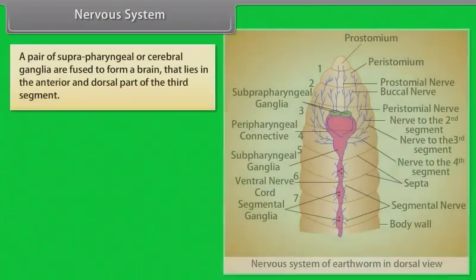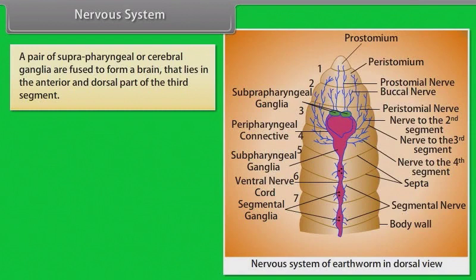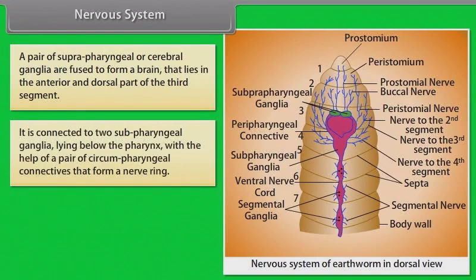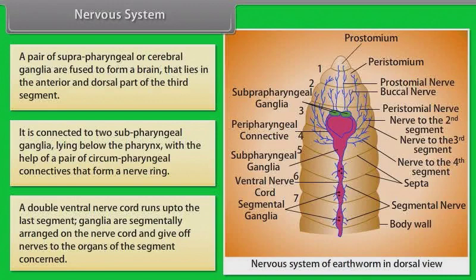Nervous System. A pair of suprapharyngeal or cerebral ganglia are fused to form a brain, which lies in the anterior and dorsal part of the third segment. It is connected to two subpharyngeal ganglia lying below the pharynx with the help of a pair of circumpharyngeal connectives that form a nerve ring. A double ventral nerve cord runs up to the last segment. Ganglia are segmentally arranged on the nerve cord and give off nerves to the organs of the segment concerned.